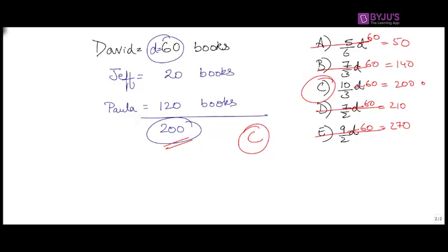You might get confused why I took 60. A tip: since we have a fraction D by 3, and if you look at the answer options, the denominators have 6, 3, and 2, the best way is to take a value which is divisible by the LCM of 6, 3, 2, or a multiple of that LCM. That's why I took a value of D as 60.